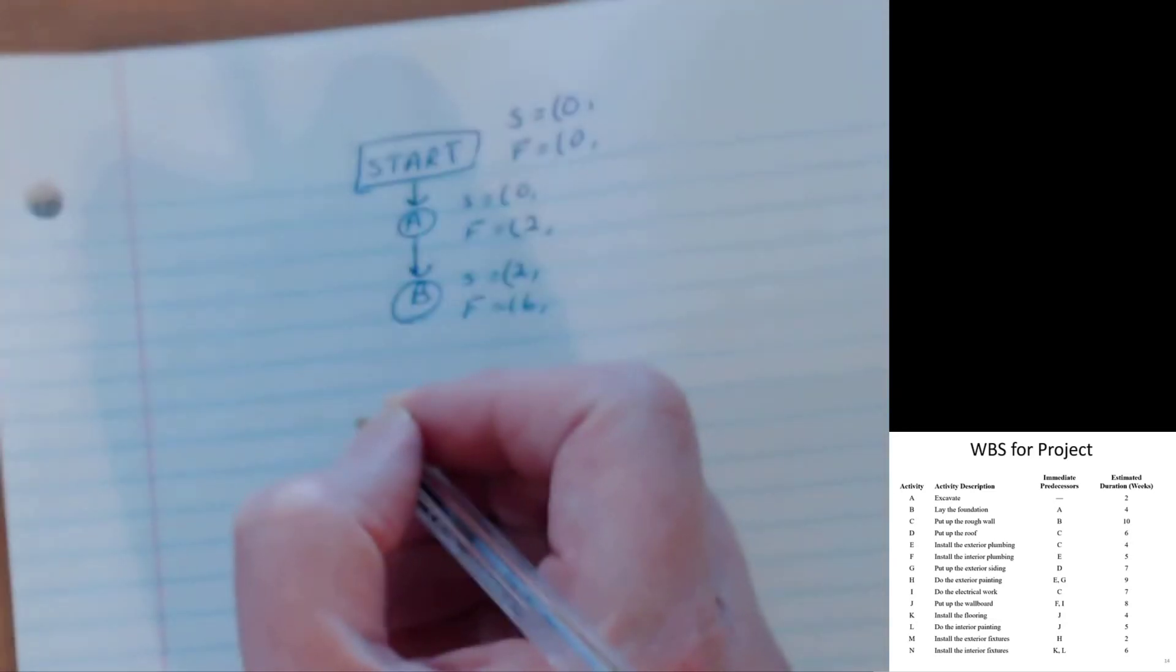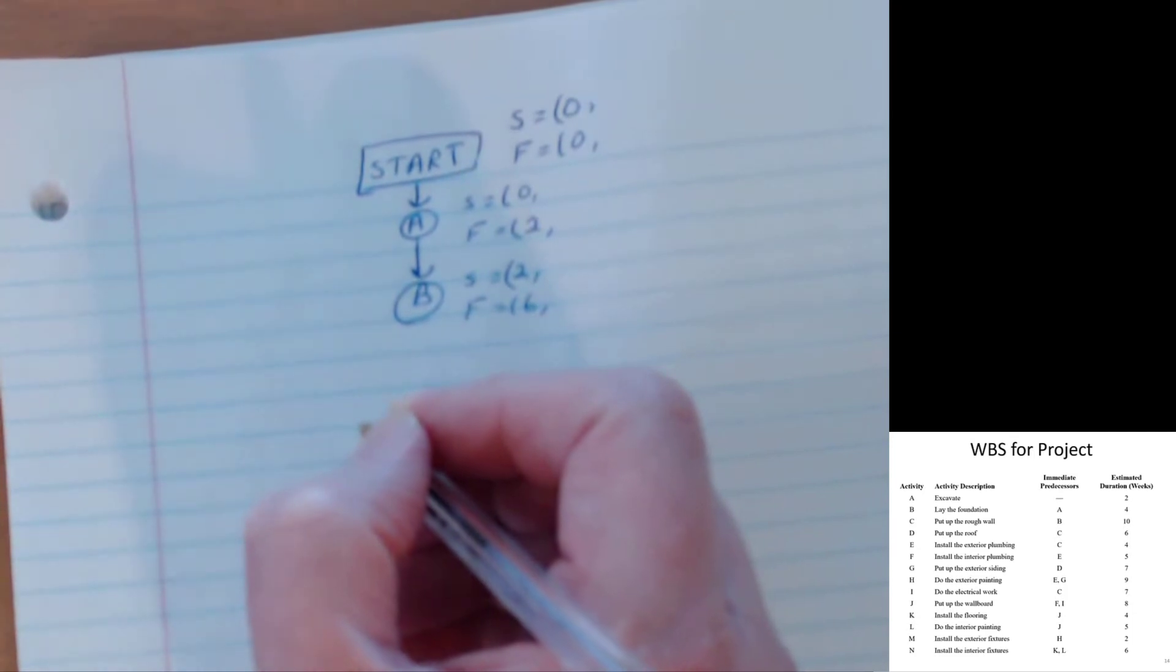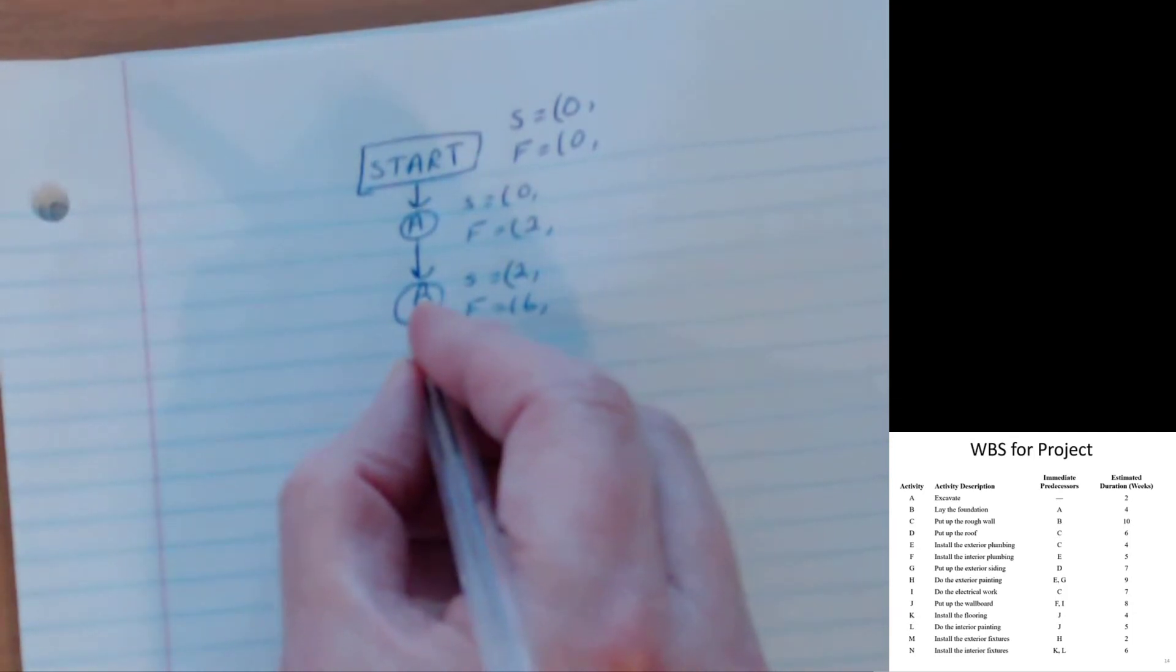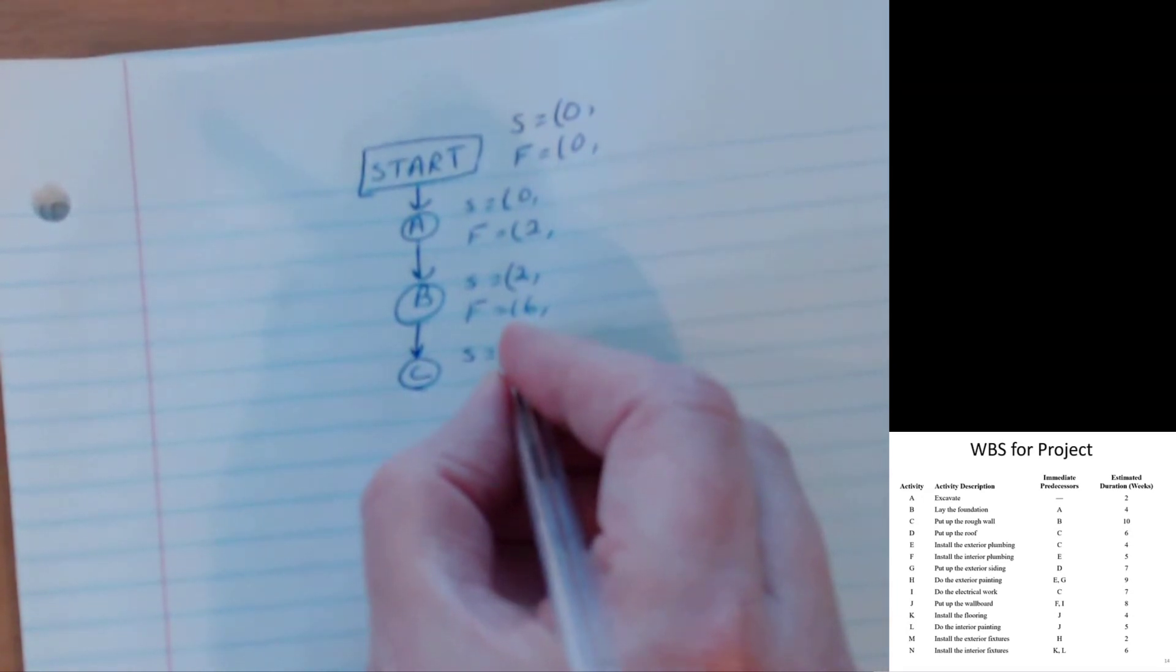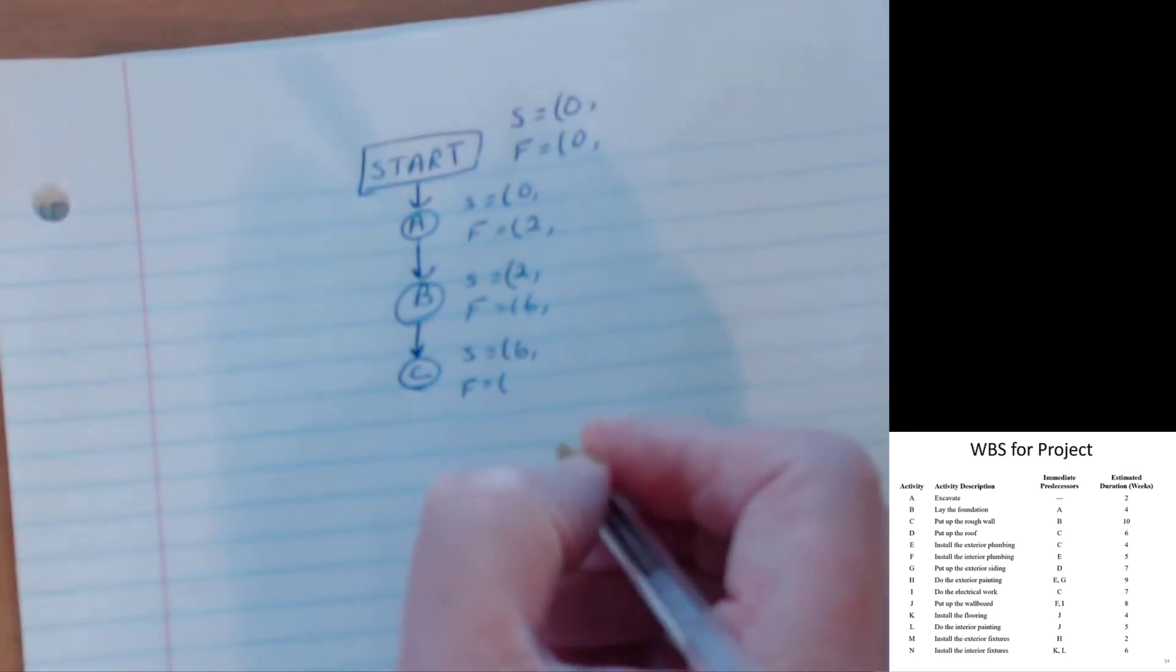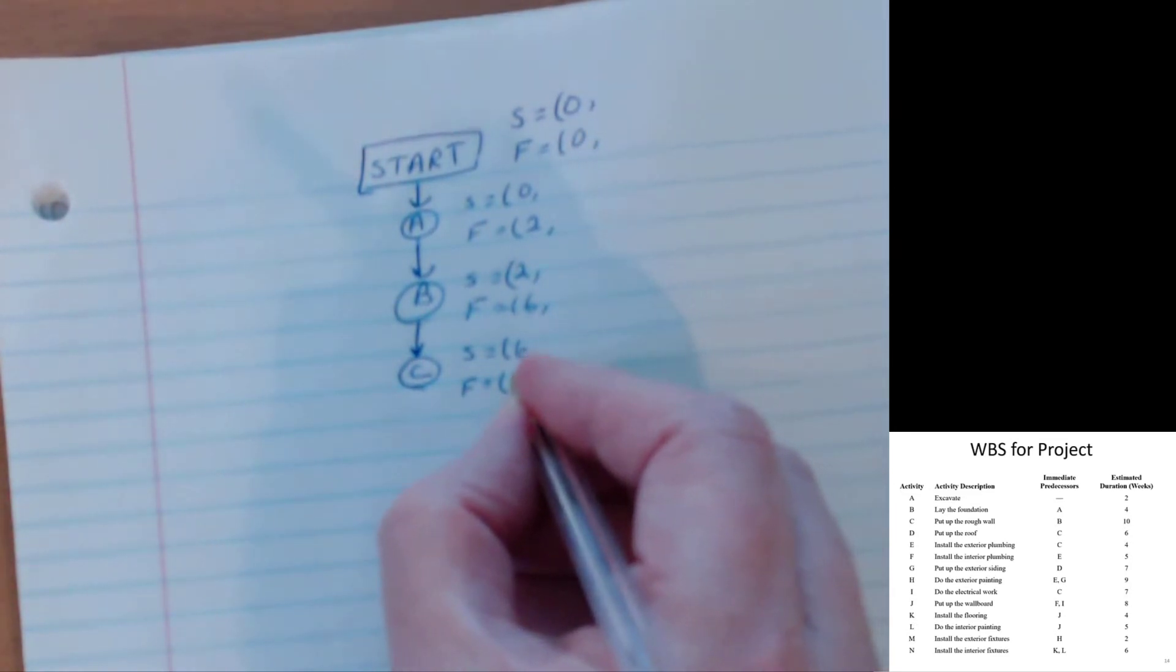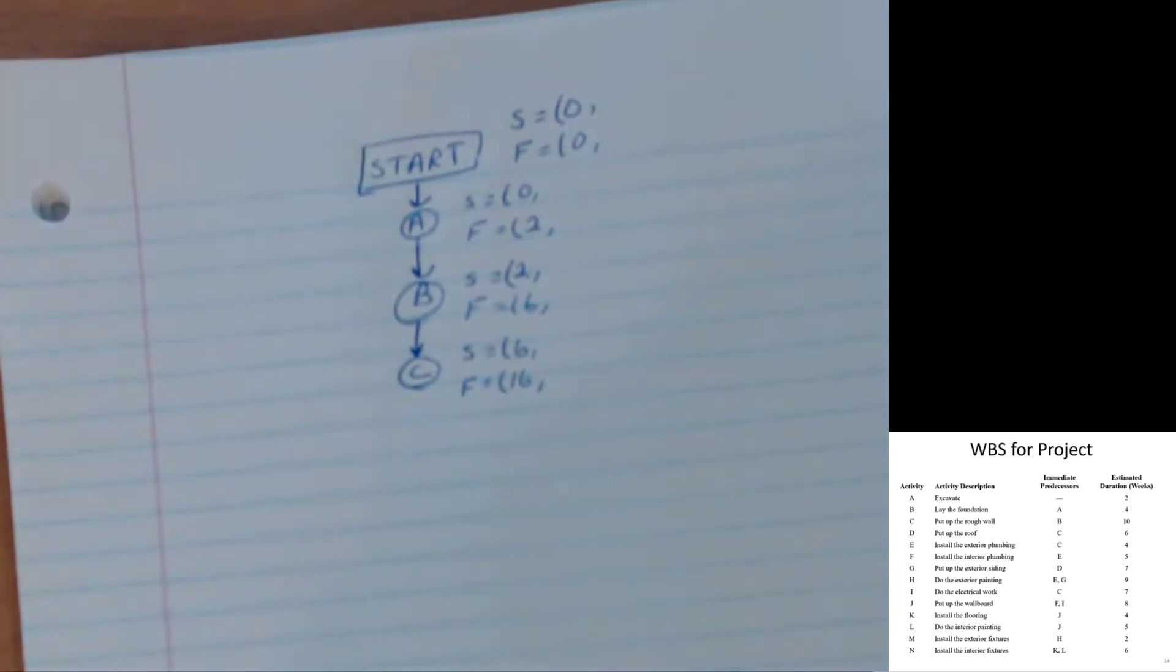Look at activity C. Activity C again has only one predecessor, and that's B. Nobody else has B as a predecessor. So we go from B to C. C can't start until B is finished. When does B finish? It finishes in period six. How long does C take? C takes ten weeks. Six plus ten is sixteen. So if it starts in period six, takes ten weeks to do, it means it's not going to finish until period sixteen. Ten plus six. So I have C.